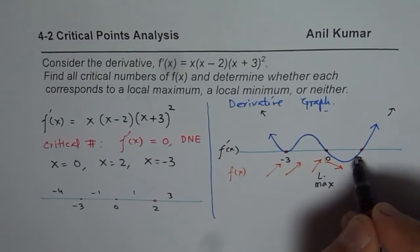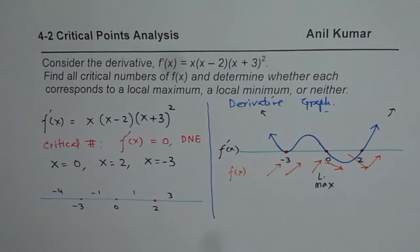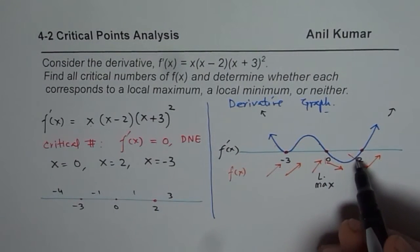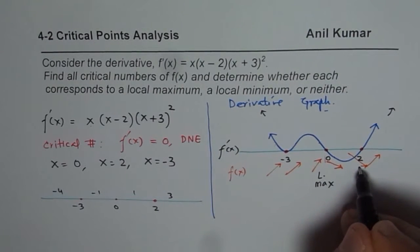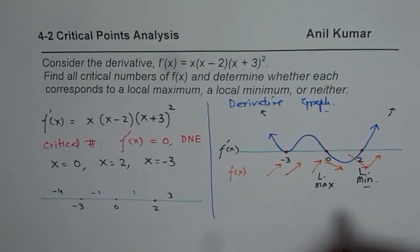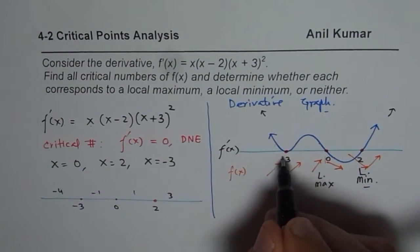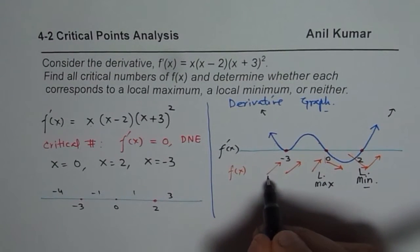Here, it goes from negative part. So, it is negative and then positive. So, it changes from negative to positive. So, it is local minimum. So, local minimum on the function. But on this point, it is positive on both sides, so it is neither.